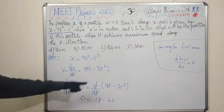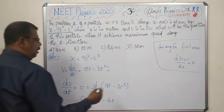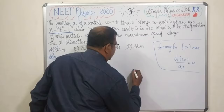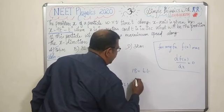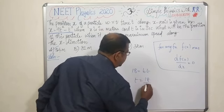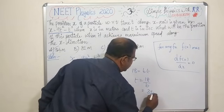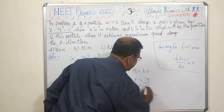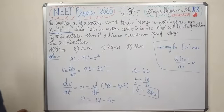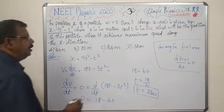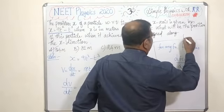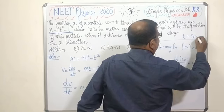dv by dt equals 0, then 18 equals 6t. T equals 18 by 6, or 3 seconds. So T equals 3 seconds.